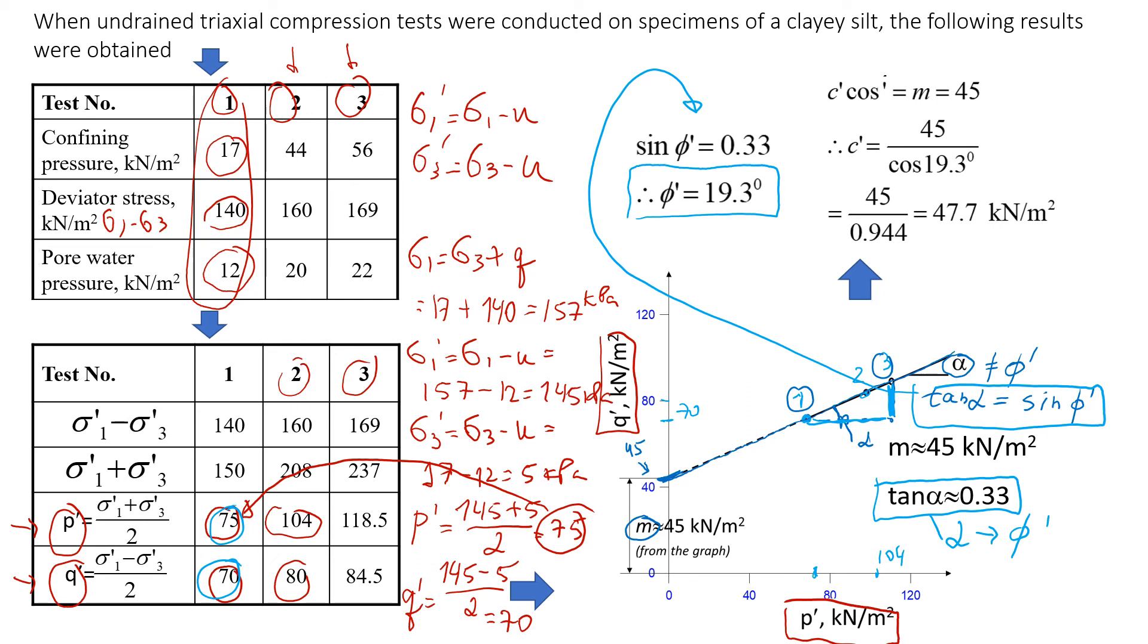This is the relationship between m that we found here from this graph and cohesion. It says the cohesion is m divided by a cosine of the friction angle. This m we already found from the graph, it's 45.